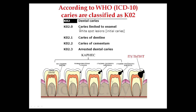Code K02.0 corresponds to caries limited to enamel, also called white spot lesion or initial caries. K02.1 is caries of dentin. K02.2 is caries of cementum. K02.3 is arrested dental caries. These are the four stages according to the ICD, the International Classification of Disease by the World Health Organization.